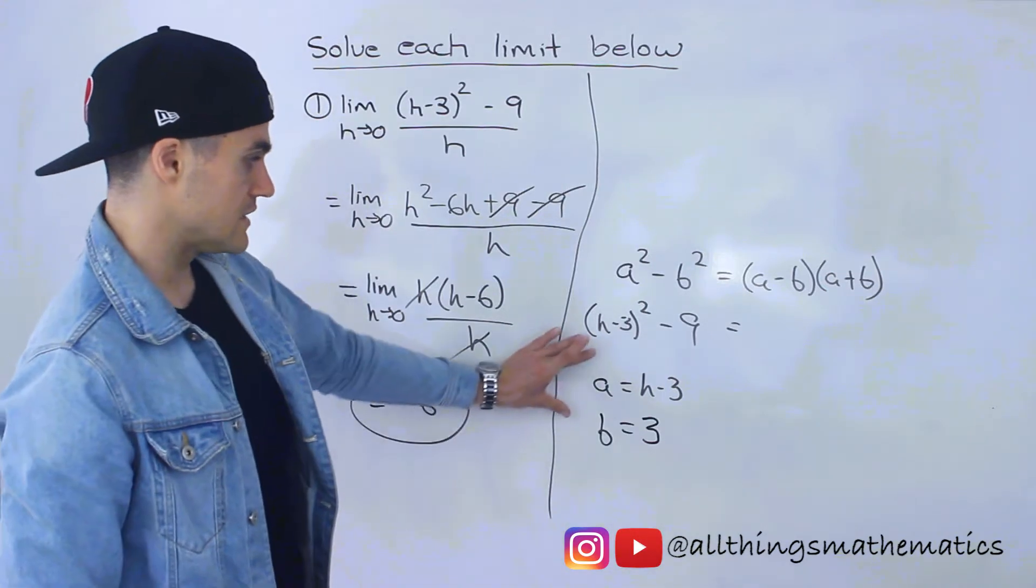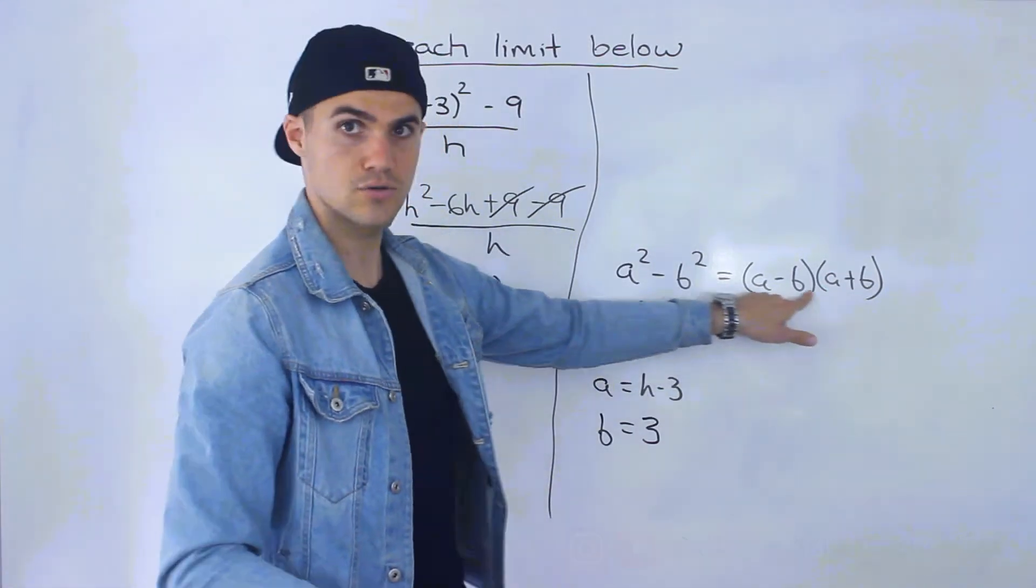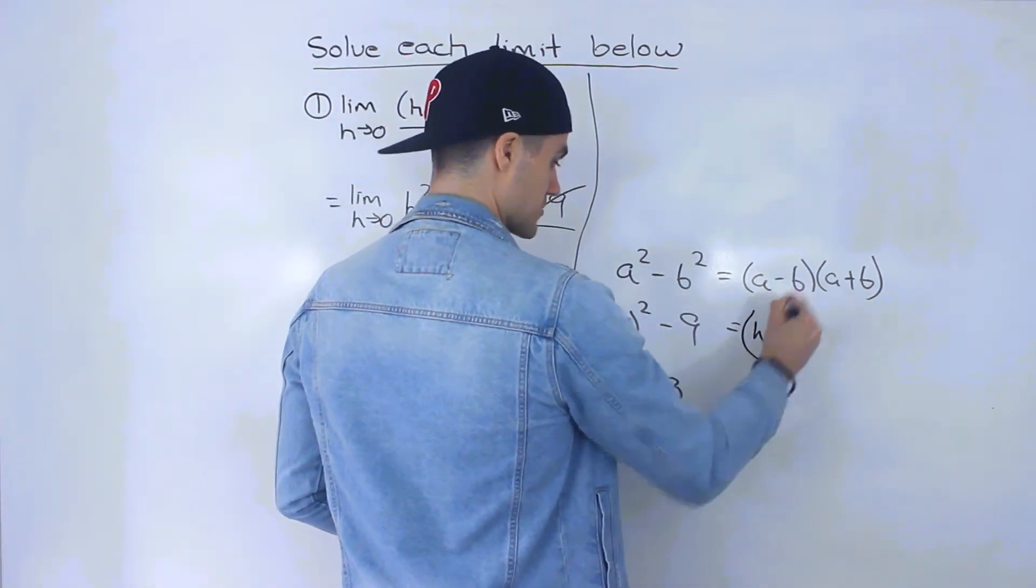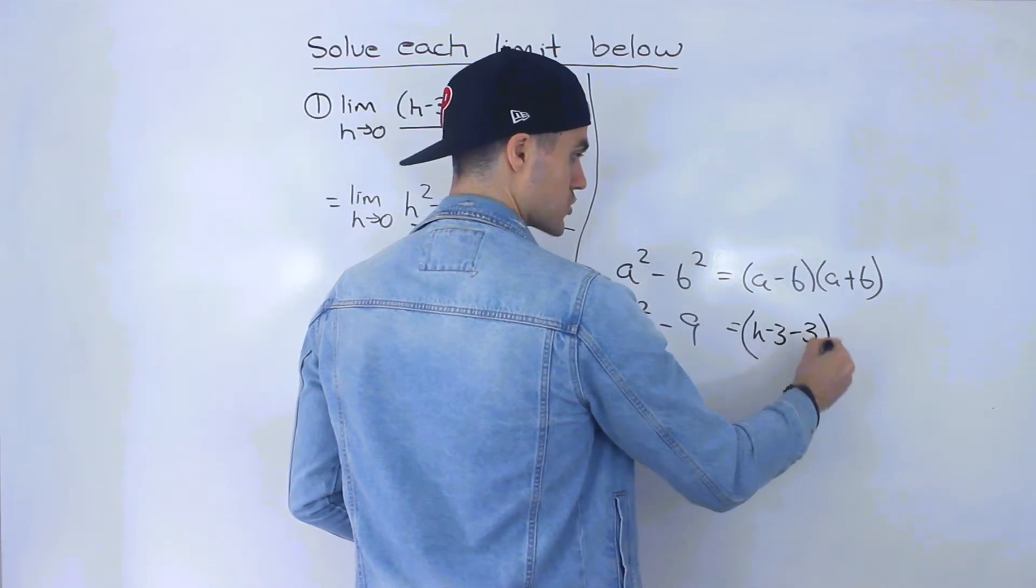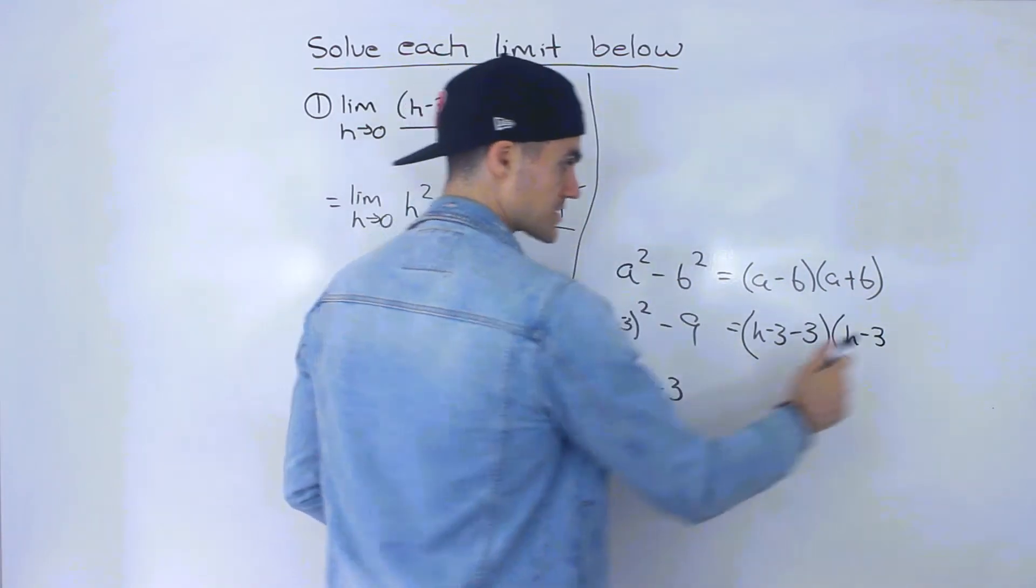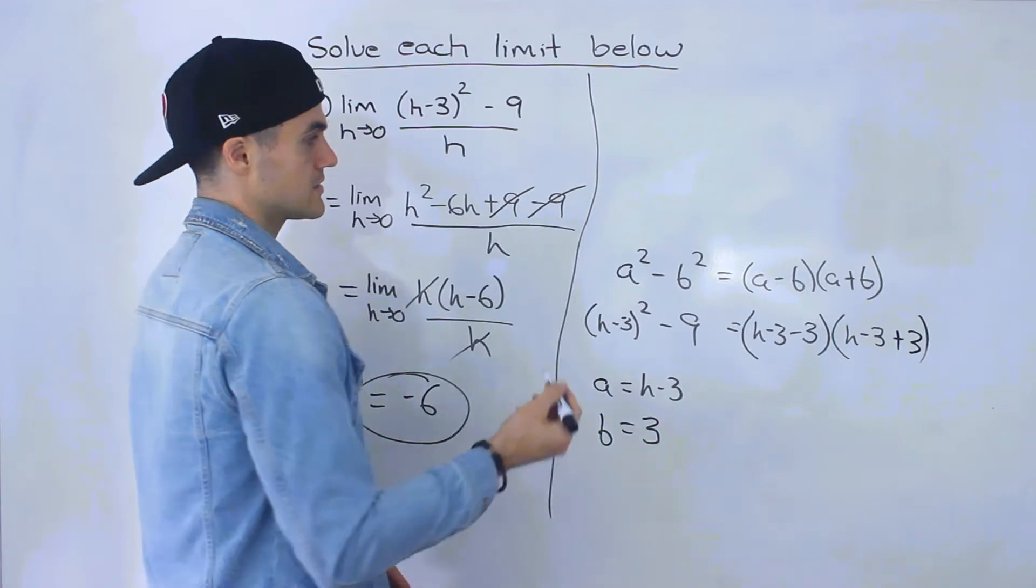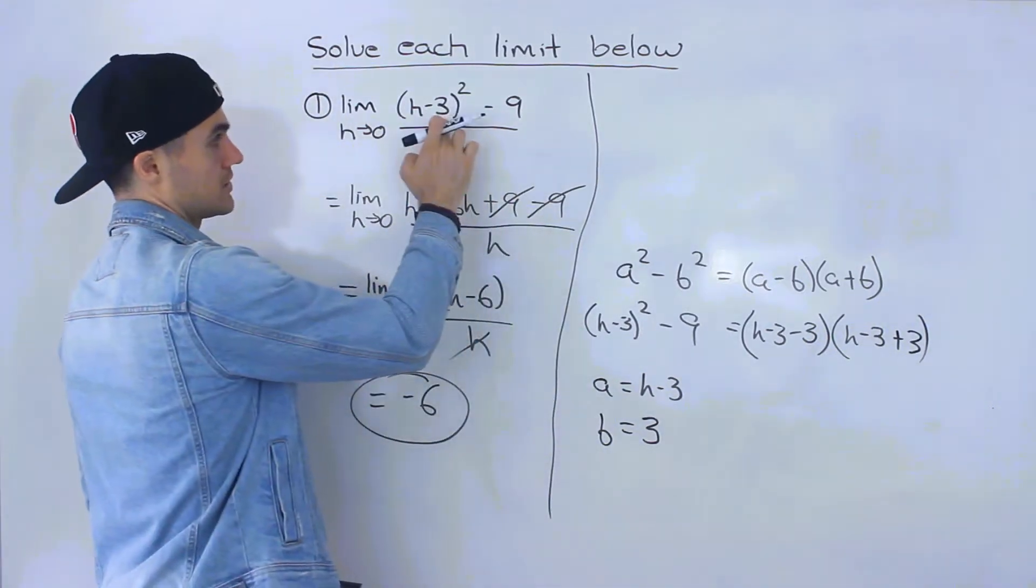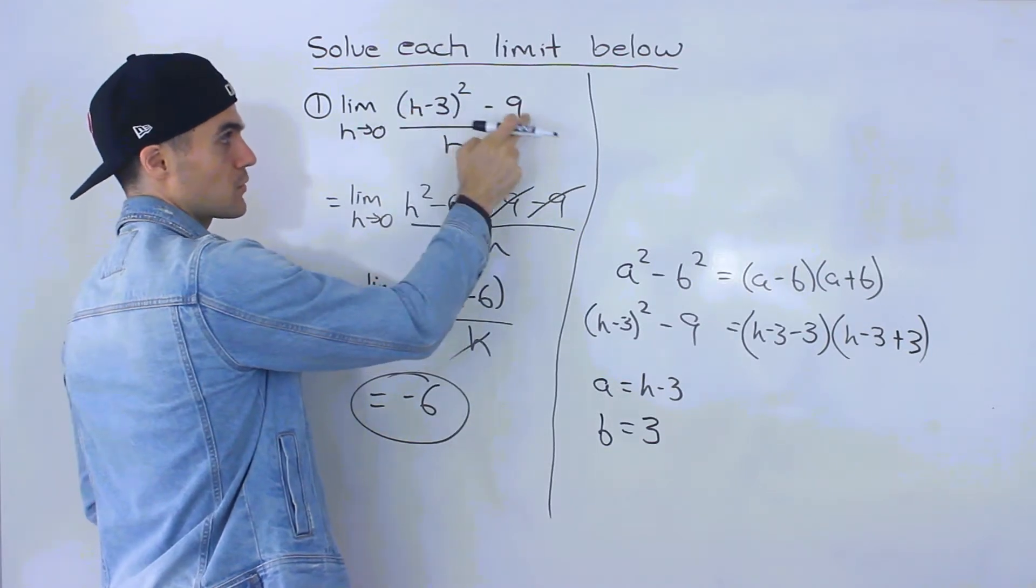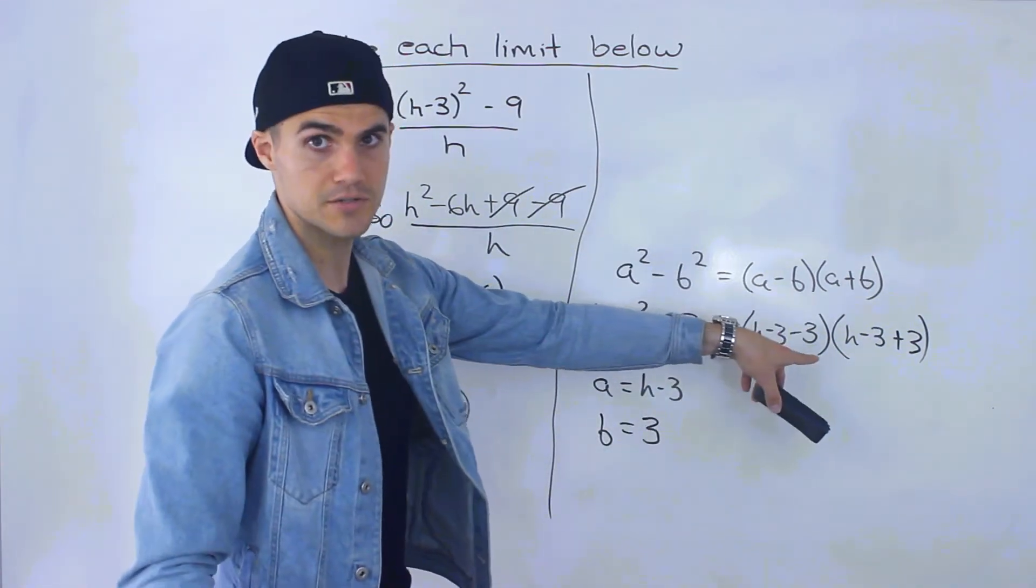So now if we take these expressions for a and b and plug them into that formula the a value h minus 3 then we're subtracting b subtracting 3 again and then we have h minus 3 for a plus b plus 3. All right so this whole expression was to the power 2 minus 9 the square root of that expression is h minus 3 square root of this is 3 so we'd have h minus 3 minus 3 h minus 3 plus 3.